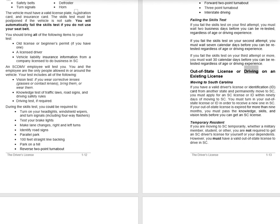Out-of-State License or Driving on an Existing License — Moving to South Carolina: If you have a valid driver's license or identification (ID) card from another state and permanently moved to SC, you must apply for an SC license or ID within 90 days of moving to SC. You must turn in your out-of-state license or ID in order to receive a new one in SC. If your out-of-state license is expired for more than nine months, you must pass the knowledge, skills, and vision tests before you can get an SC license.